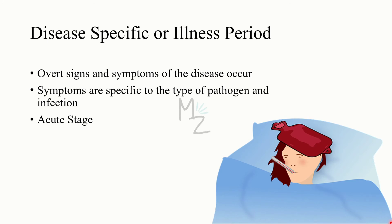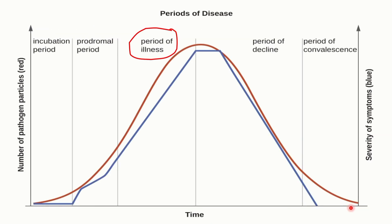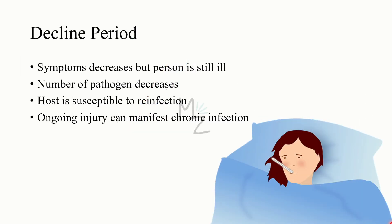The disease-specific or illness period is the stage in which the worst signs and symptoms of the disease occur. Symptoms are specific to the type of pathogen and infection. It is also termed the acute stage. The overall body has mounted an immune response, and the general malaise, fever, and unwell feeling are due to that immune response. Disease is a state in which the body cannot maintain homeostasis. The duration depends on the virulence of the pathogen and the resistance of the host's immune system. If this stage is not resolved, it can result in septicemia and death. On the graph, the number of pathogens and the severity of symptoms both increase at a higher rate.